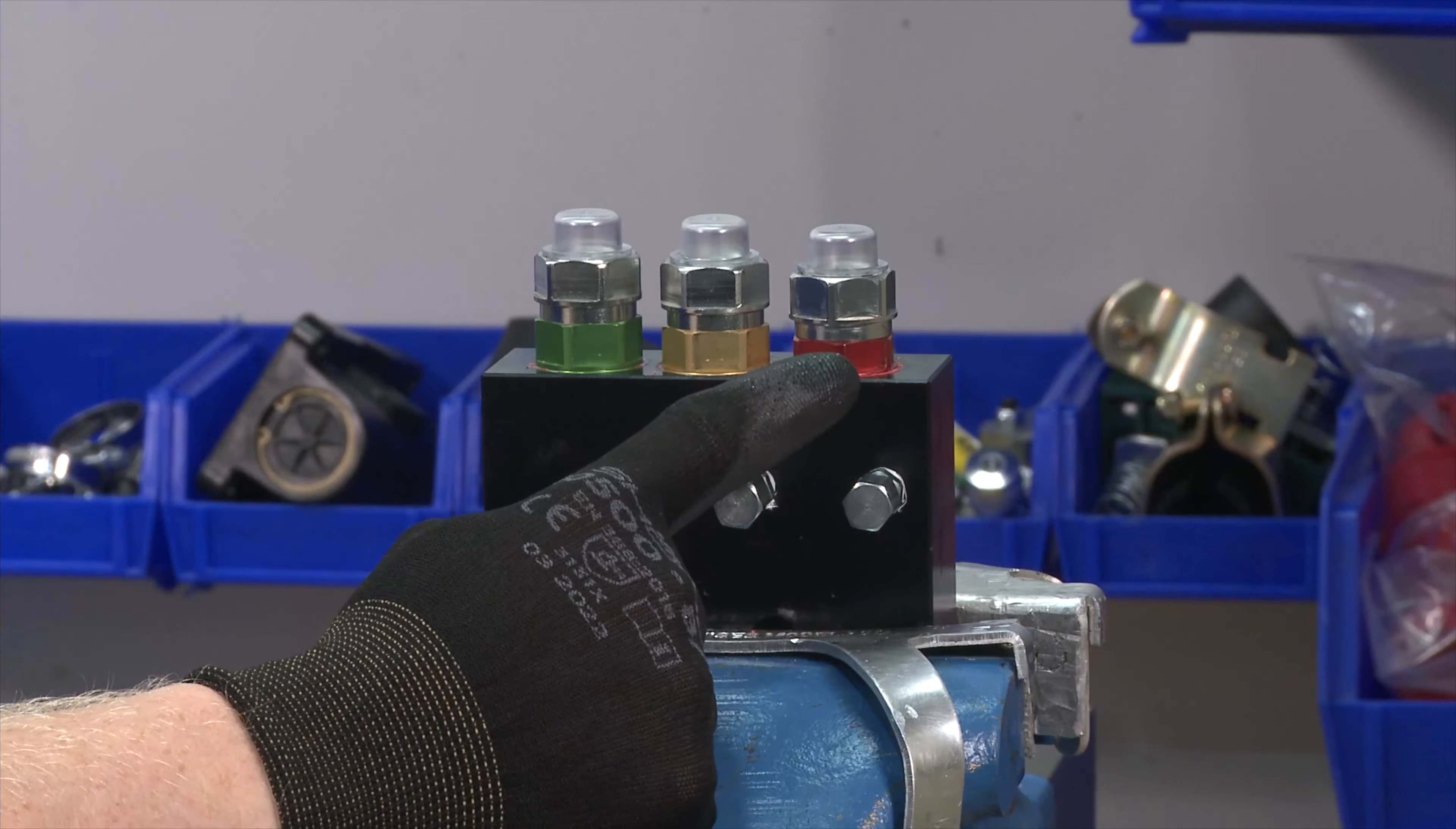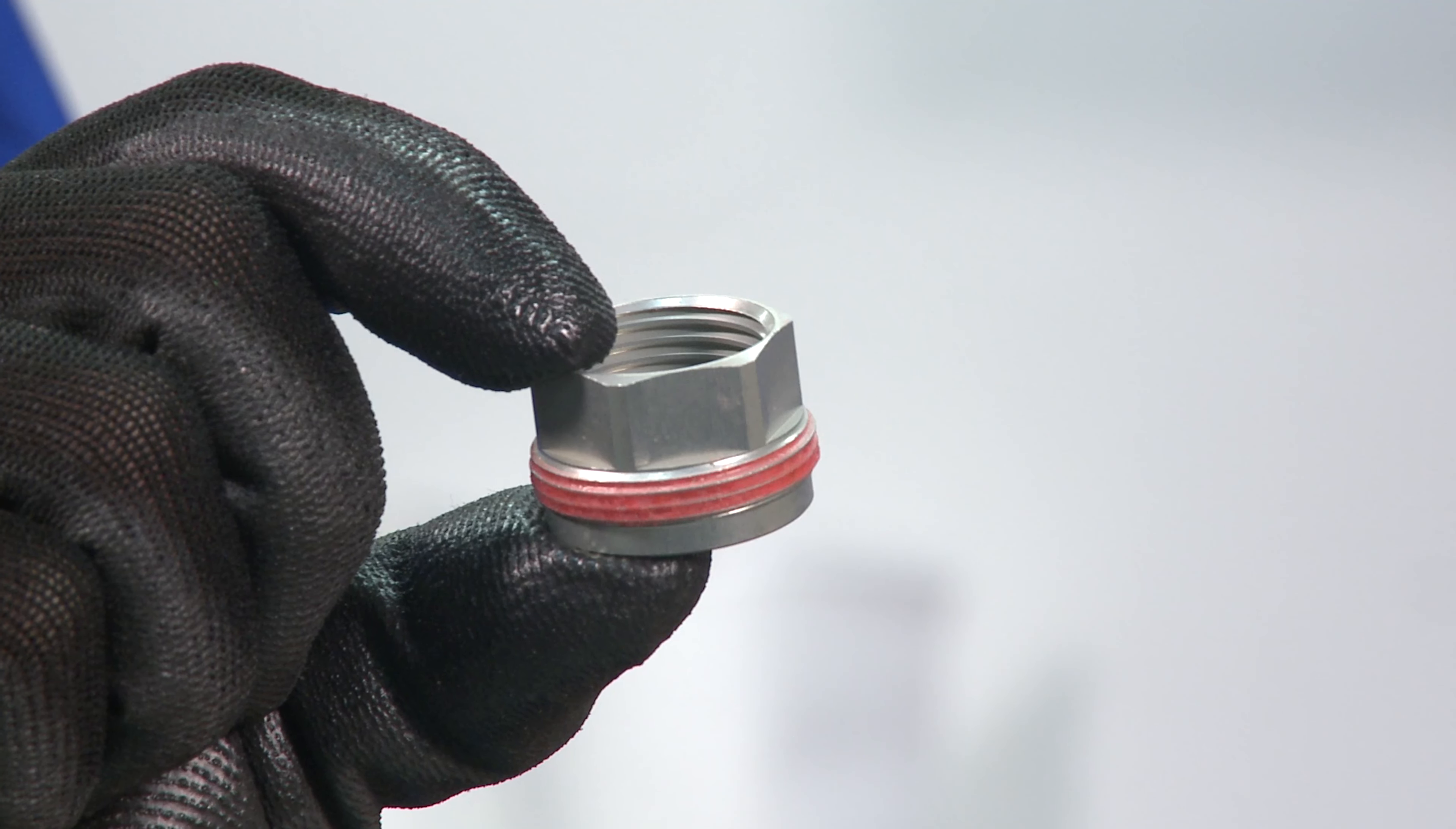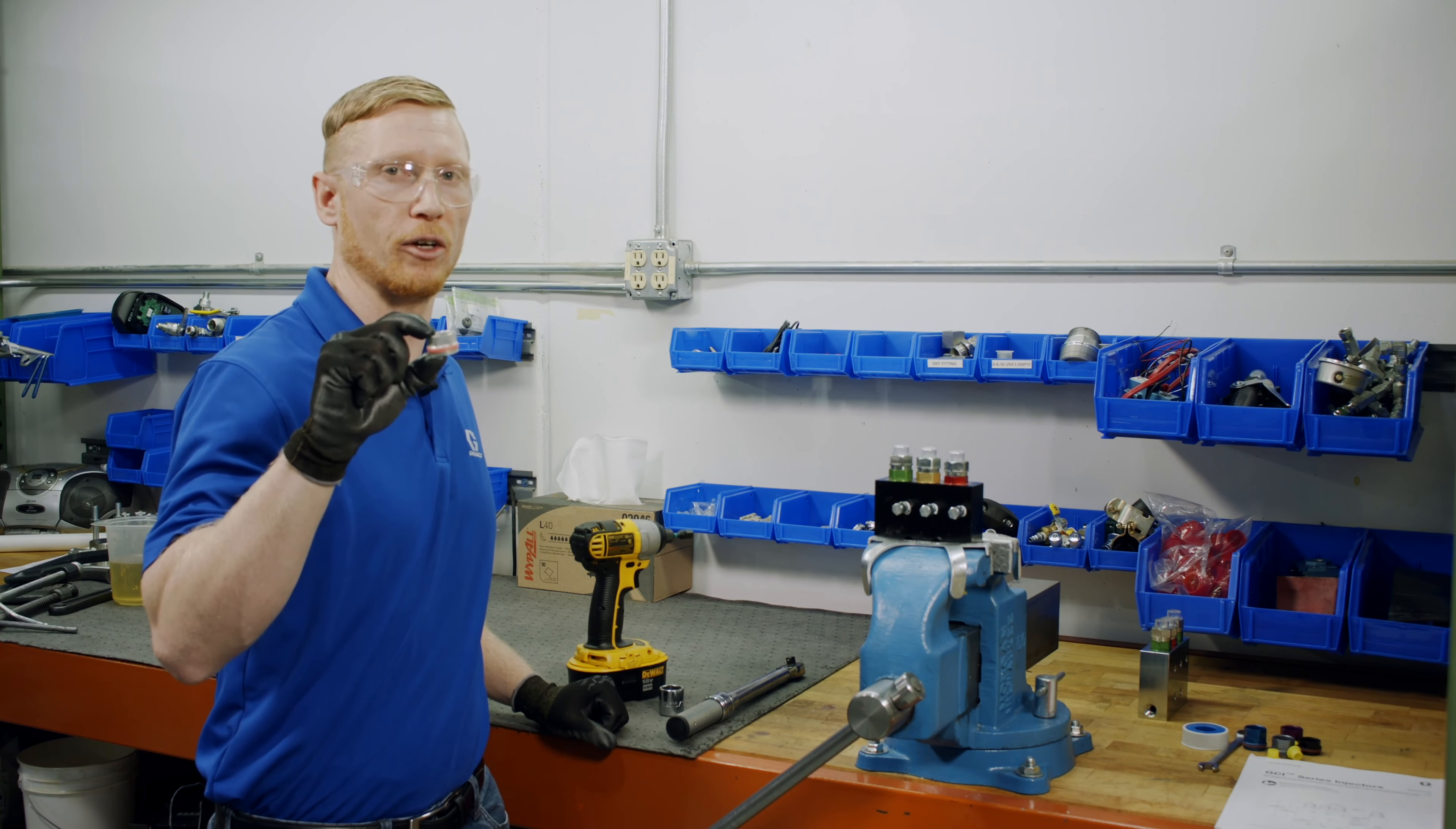I'm going to go ahead and change the output on this last injector here from 0.03 cubic inches a cycle, which is the red color, to 0.045 cubic inches. So if you have a customer that's saying they're just not quite getting enough lube to a certain point on a machine, you can go ahead and swap out these output spacers to get the desired output.